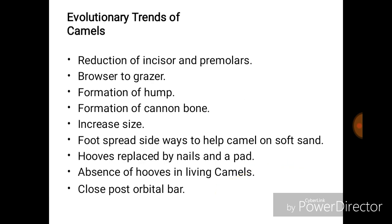The evolutionary trends of camels include: reduction of incisors and premolars, shift from browser to grazer, formation of hump, formation of cannon bone, increased body size, foot spreading sideways to help camel walk on soft sand, hooves replaced by nails and a pad, absence of hooves in living camels, and closure of the post-orbital bar.